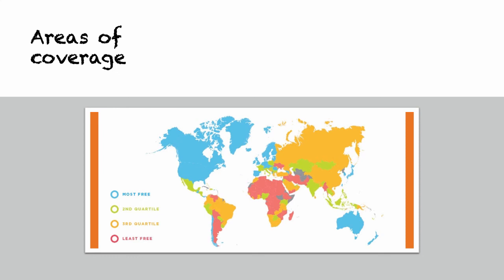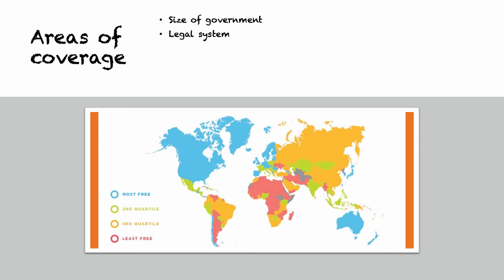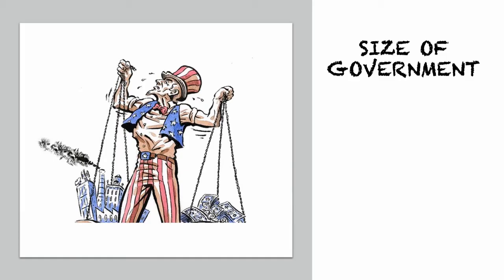The areas of coverage in the Economic Freedom of the World Index include: the size of government, how big your government is relative to GDP; the legal system; the soundness of money; the freedom to trade internationally; and the degree of regulation of the credit and labor markets and overall business. Each country gets an overall score and then a score for each one of these areas, and you can go into greater detail within each area.